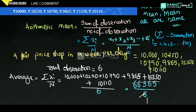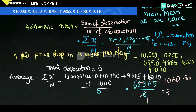So 66,365 divided by 6. Calculating: 6 into 36 gives 36, bringing down digits step by step. We get 11,060.83. So the average for the fair price shop sales per day is 11,060.83.